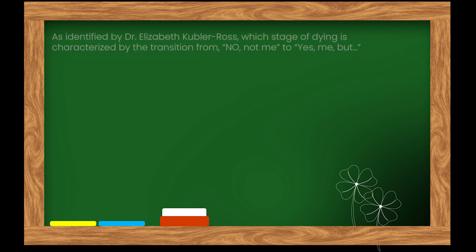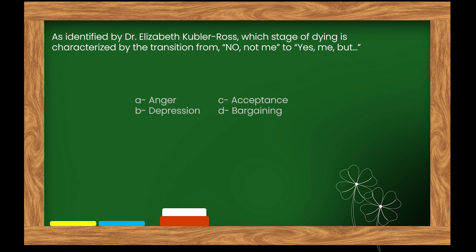Here is our next question. As identified by Dr. Elizabeth Kübler-Ross, which stage of dying is characterized by the transition from 'No, not me' to 'Yes, me, but'? Options: A. Anger. B. Depression. C. Acceptance. D. Bargaining.